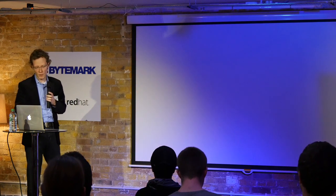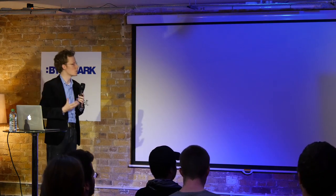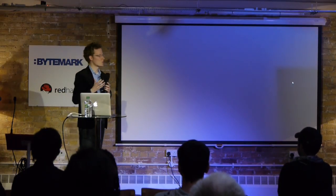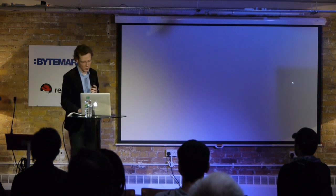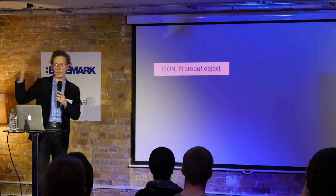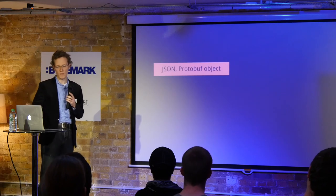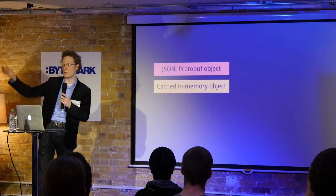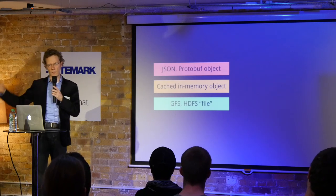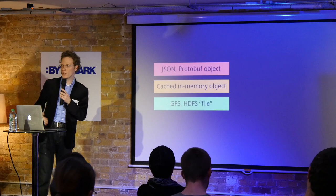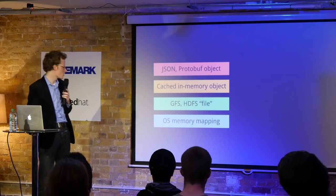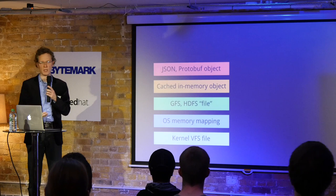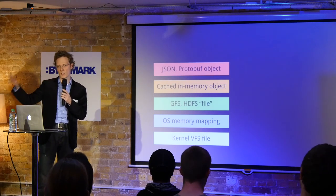So what is the problem that we're addressing here? We've seen lots of boxes and lots of stacks today. But if you think about the usual way we build distributed systems applications in terms of the abstractions we use to express them — how you actually express an object in your distributed system — it usually looks a bit like this. You have some sort of JSON, Protobuf, Thrift, or some other serialized version of the object, which you're probably storing in some sort of in-memory cache, and then that ends up being stored in a file on a distributed file system like HDFS or GFS. And then when you're interacting with it, it's mapped into memory by the operating system, and at the end of the day it ends up being a file on disk in a kernel file system like ext3 or ext4.